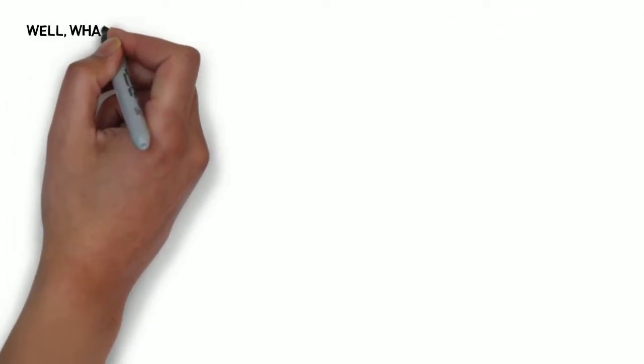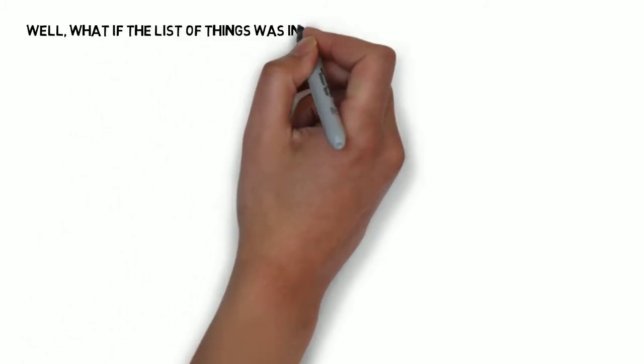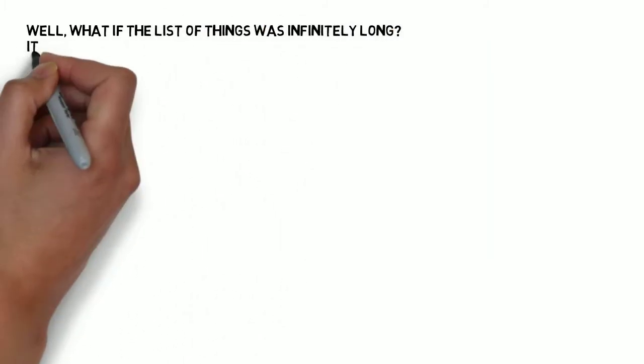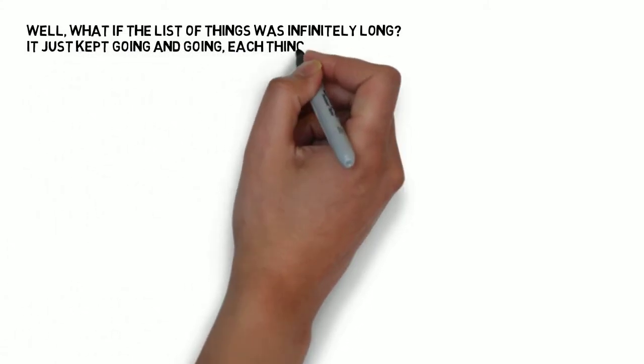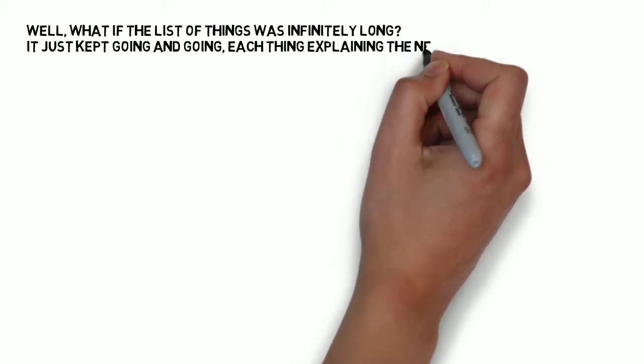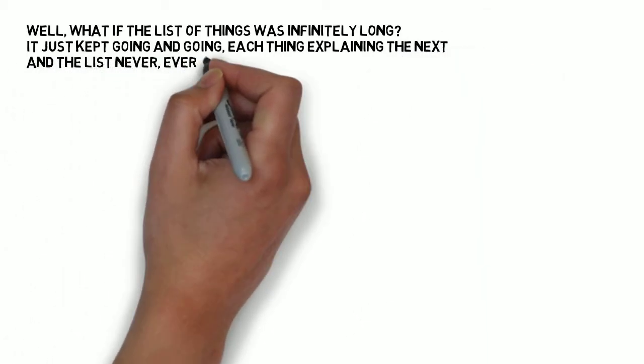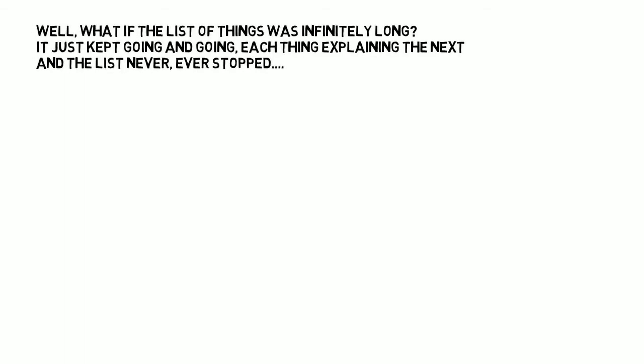Well, some people say, imagine the universe is infinitely old and each state of the universe is explained by the state just prior to that. So if we've got an infinitely long list of contingent things and everything on the list is explained by the thing just before it, wouldn't that get rid of the need for God?